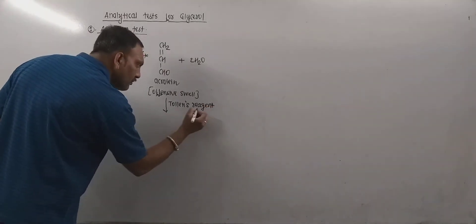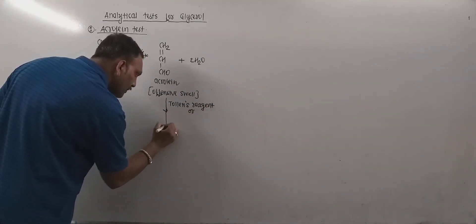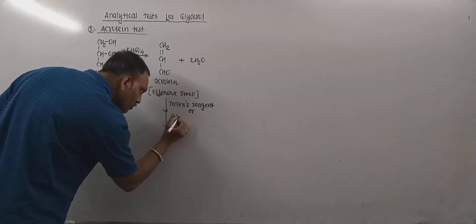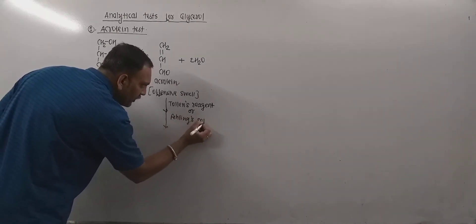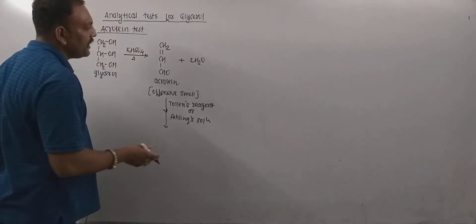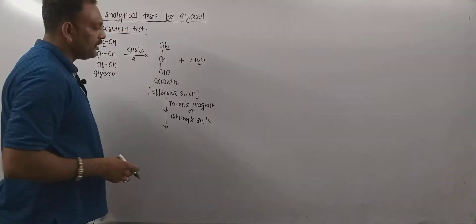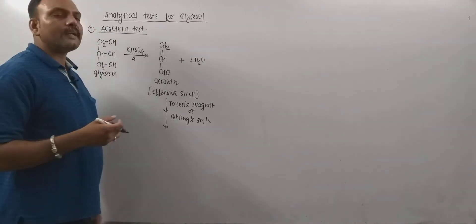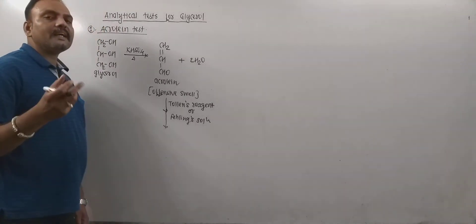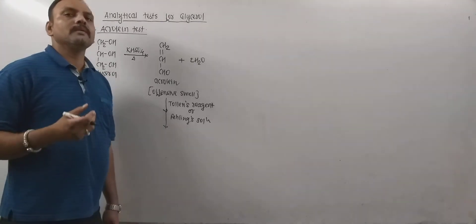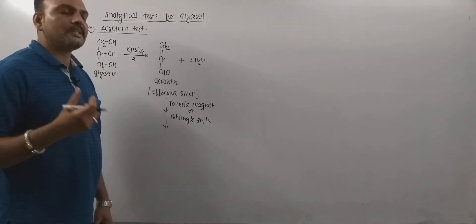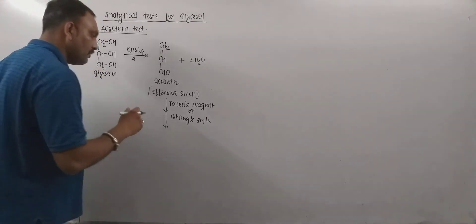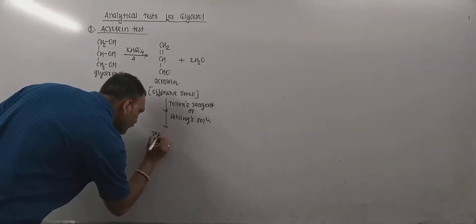It can reduce Fehling solution also. So Fehling solution gets reduced when we treat the product acrolein with it. That leads to the deposition of red-brown precipitate of cuprous oxide, and it has ability to restore the original pink color of Schiff's reagent also. So the reducing character, reducing nature...